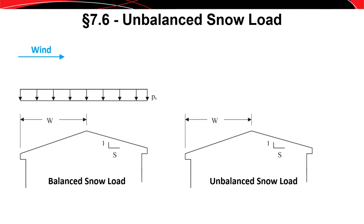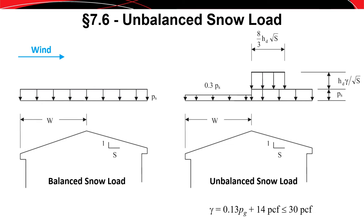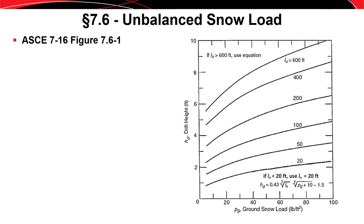This unbalanced load is illustrated on this slide. The balanced load case is on the left, and the unbalanced load is on the right. Snow is taken from the windward side to the left of the ridge and deposited on the leeward side to the right of the ridge by the wind. In this equation, gamma is the unit weight of the snow, taken as a maximum of 30 pounds per cubic foot, and S is defined as the slope of the roof. Figure 7.6-2 is where we determine the height of the drift H_D.